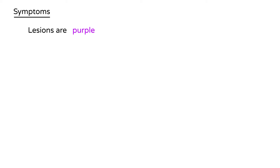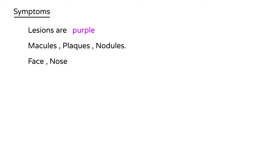So what exactly does this tumor look like? The lesions are characteristically described as being purple, and they can be either macules, plaques, or nodules. They can appear on various parts of the body — on the face, nose, the oral mucosa, and a few other places as well. If you have a clinical vignette that describes purple lesions in a patient with some form of immunosuppression such as AIDS or organ transplant, then Kaposi sarcoma should be very high on your differential diagnosis.